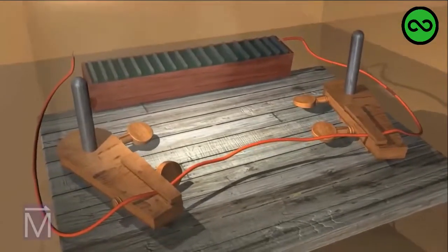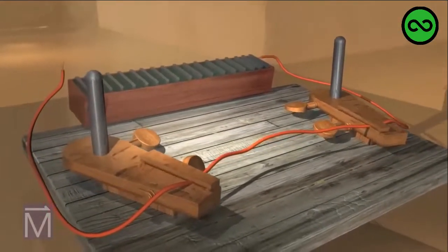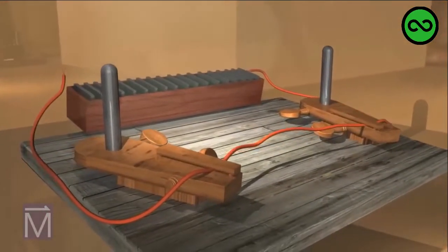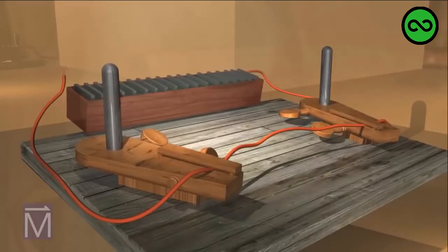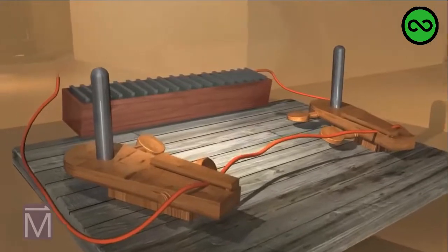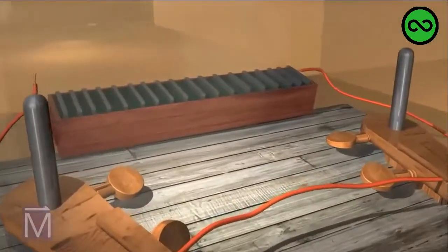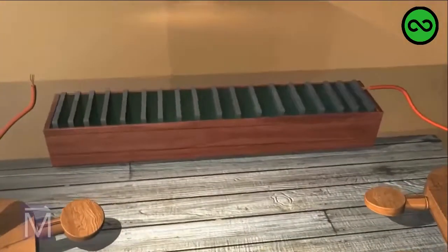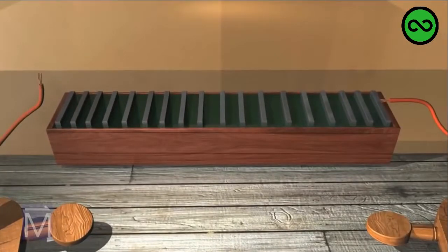In 1820, Danish physicist and chemist Hans Christian Ørsted was setting up materials for a lecture. His materials included an early kind of battery called a voltaic pile constructed of copper and zinc plates in a dilute acid solution and a wire held in place by a set of clamps.